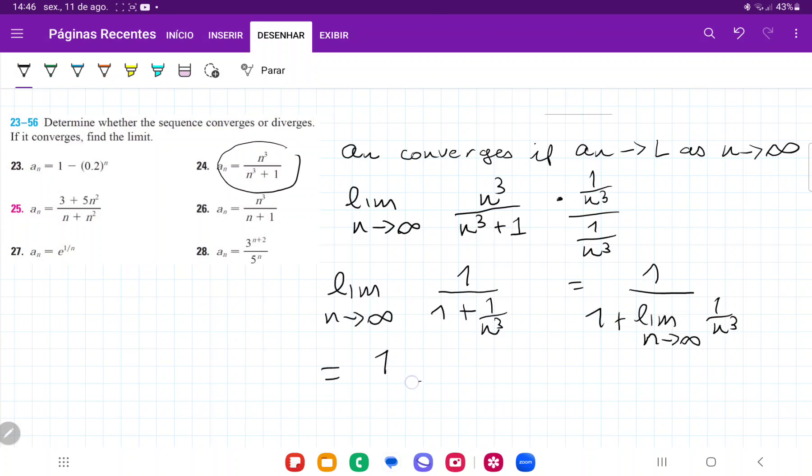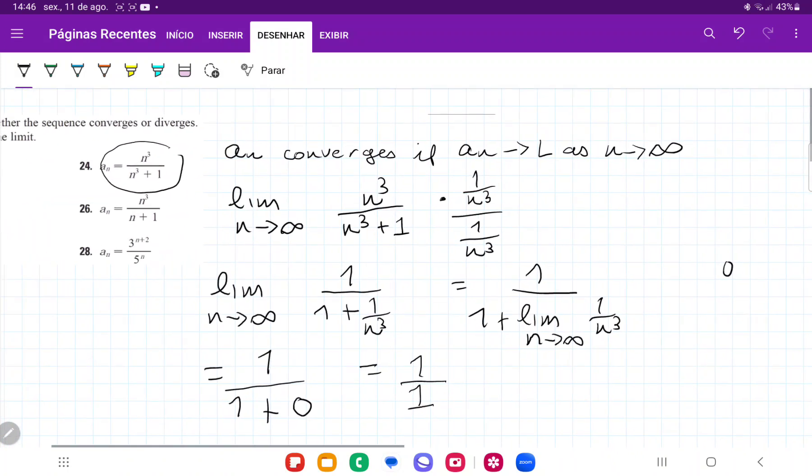And so this is equal to 1 over 1 plus, and this limit goes to 0, so that's going to be 0. Since anything divided by a large number becomes very small, then this is equal to 1 over 1. So since the limit exists, we can say that an converges because the limit is 1.